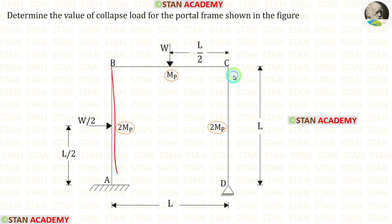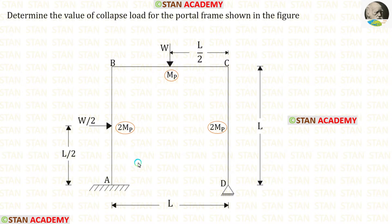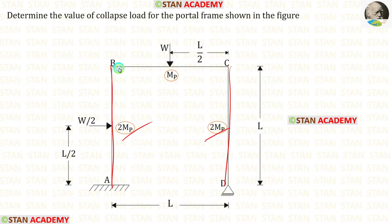The height of the columns is L and the length of the beam is also L. We have different plastic moment capacities: for the columns it is 2MP and for the beam it is MP.